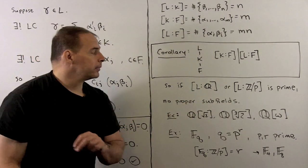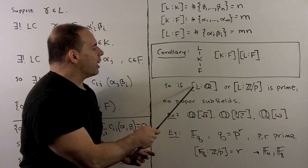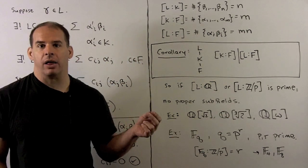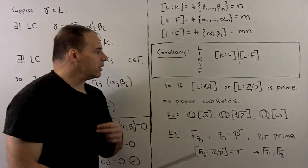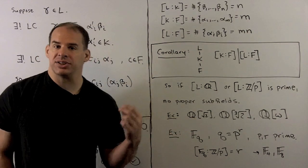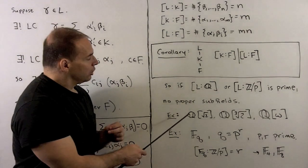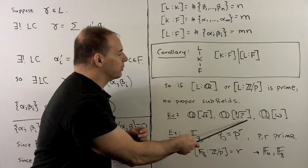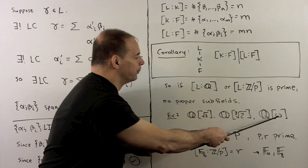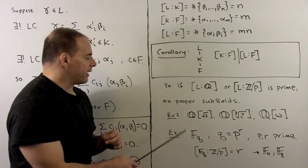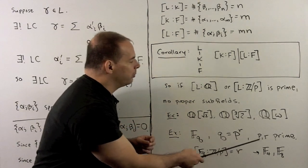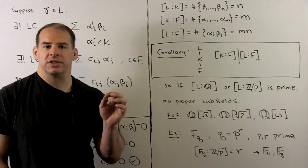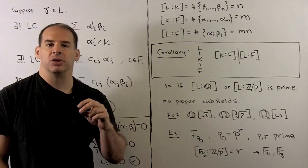For an application: if the degree of L over the rationals, or over Z mod P for a prime P, is itself prime, then L has no proper subfields — the only subfields are the base field (Q or Z mod P) and L itself. Examples of this include Q(√2) with degree 2 over Q, Q(∛2) with degree 3, Q(ω) with degree 2, and for finite fields, F_Q with Q = P^R where both P and R are prime, giving [F_Q : Z mod P] = R — examples being F₄ and F₈.